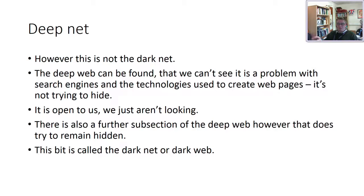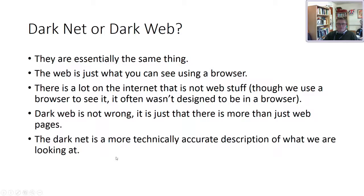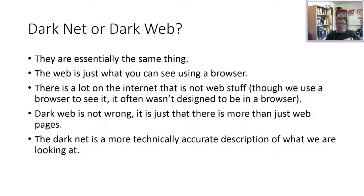There is, however, a further subsection — a new basement below the deep web — that does try to remain hidden. That bit is what we're calling the dark net or dark web: information that people are hiding on the internet. To recap: you've got the normal searchable 4% of information, about 95-96% that is there but we just don't know how to find it and it's not trying to hide, and then another bit right at the bottom which is trying to hide. The dark web is not wrong as a term — it's just that there is more than just web pages on the dark net, so dark net is a more technically accurate description.